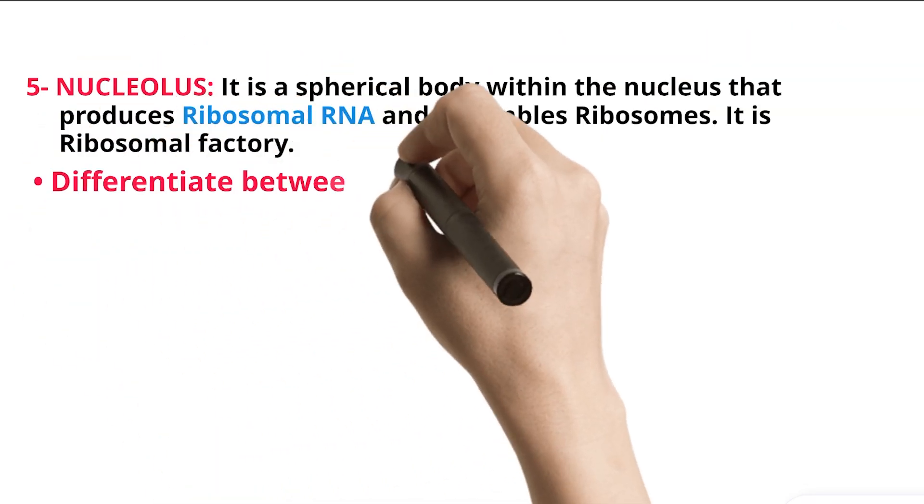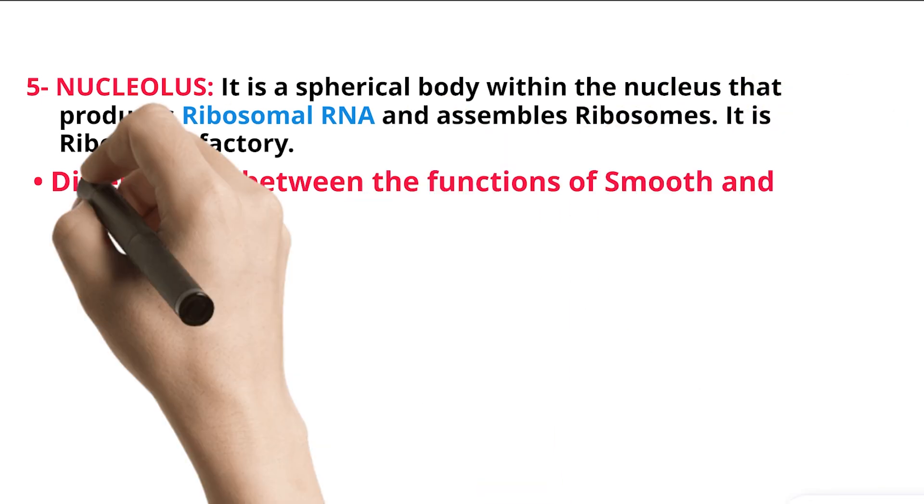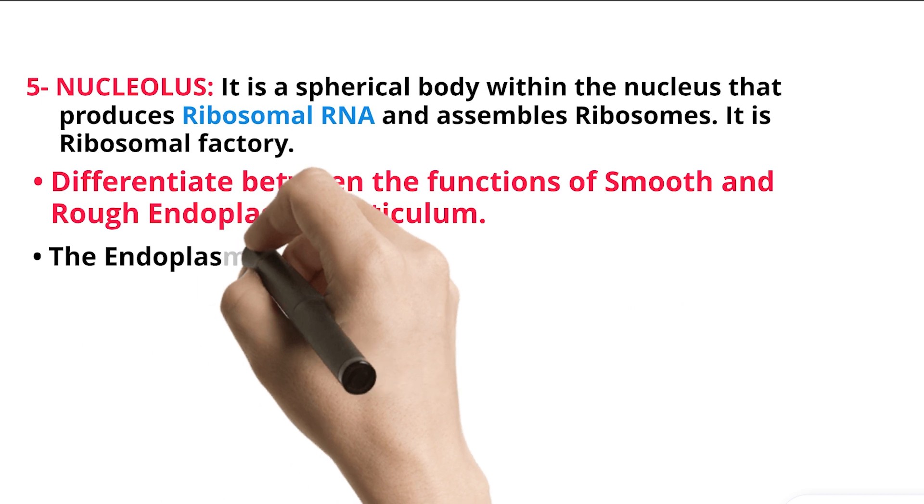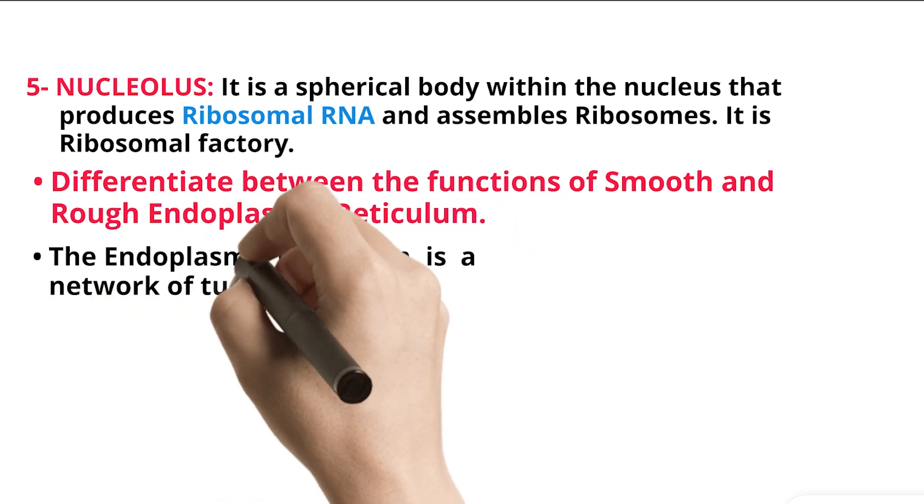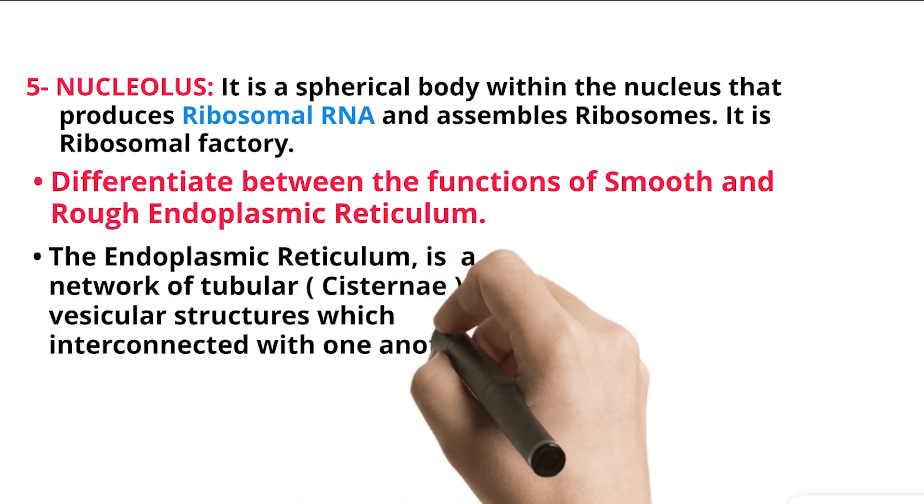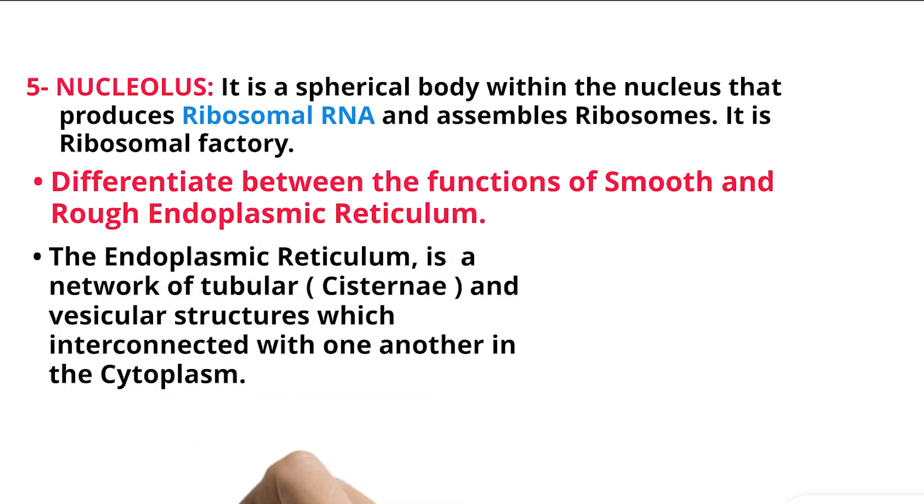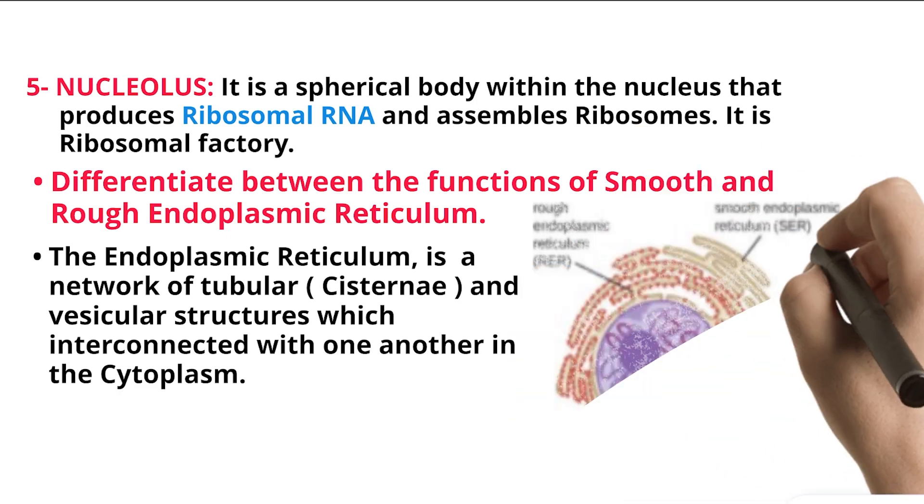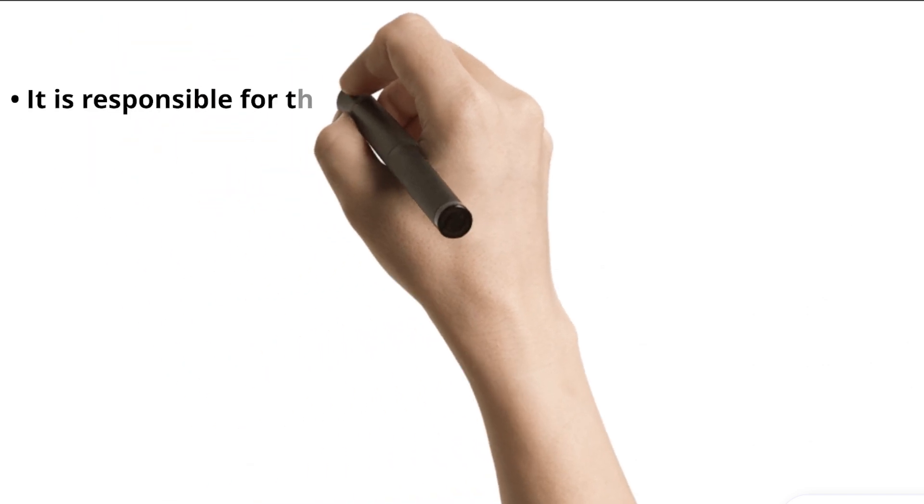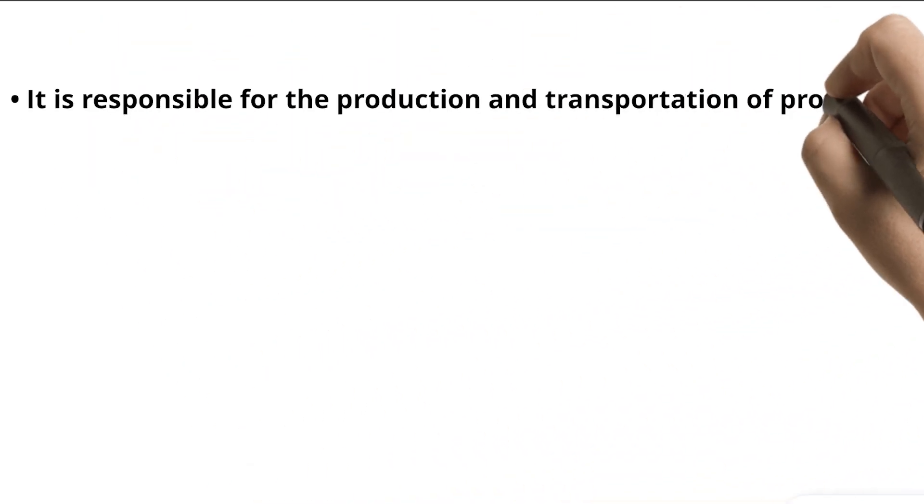Differentiate between the functions of smooth and rough endoplasmic reticulum. The endoplasmic reticulum is a network of tubular cisternae and vesicular structures which interconnected with one another in the cytoplasm.